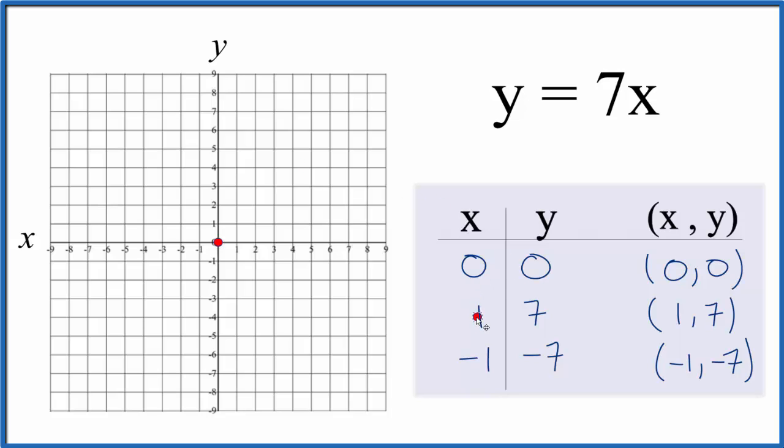How about x is 1, y is 7. So we go over to 1 and then up on the y-axis to 7 right there. We could just graph with two points. I like three because if I made a mistake this will catch my error.